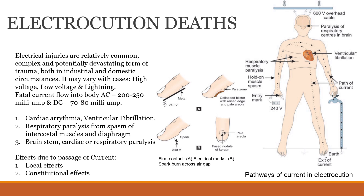A second effect is respiratory paralysis from spasm of the intercostal muscles — the chest muscles — and the diaphragm, which causes hypoxia: an inadequate oxygen supply to the chest region and other parts of the body. Additionally, brain stem cardiac and respiratory paralysis can be seen, particularly when the injury occurs through a pathway from the head to the neck.